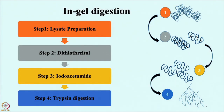You will first do lysate preparation, then do the reduction step using dithiothreitol (DTT). You do not want reoxidation to occur again, so you treat the sample with iodoacetamide (IAA) and then proceed for trypsin digestion so that proteins are chopped down to peptides.